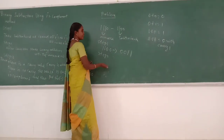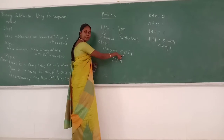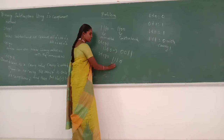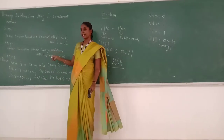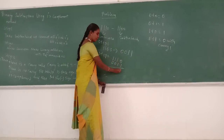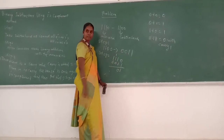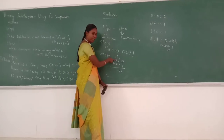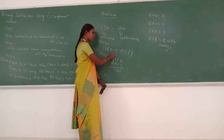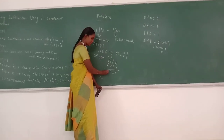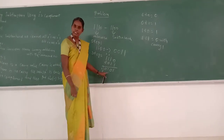The minuend number is 1 1 1 0. The converted subtrahend number is 0 0 1 1. Step 2: Make binary addition. 0 plus 1 equals 1; 1 plus 1 equals 0 with carry 1; 1 plus 1 equals 0 with carry 1. The sum is 0 and carry is 1. This completes step 2.